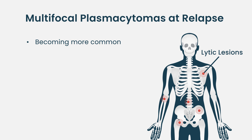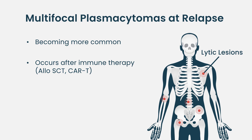The multifocal plasmacytoma that occurs later in the disease is a slightly different entity, and it is being seen more nowadays. We see many multifocal relapses in myeloma with bone marrow showing no plasma cells, but tumors popping up usually in the shoulders or back. This entity is being seen in immune therapy settings — for example, with allogeneic transplant, when patients relapse, the bone marrow is completely taken over by donor cells and the relapse occurs outside the bone marrow in those multifocal sites.